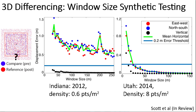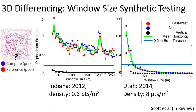Now I will discuss how Open Topography makes a recommendation for the ideal window size. The window size is the dimension of the compare dataset, and for airborne lidar data this length is typically a few tens of meters. We make recommendations based on synthetic testing with multiple datasets hosted by Open Topography. To do the synthetic testing, we take an individual dataset — for example, Indiana or Utah — and split it in half.